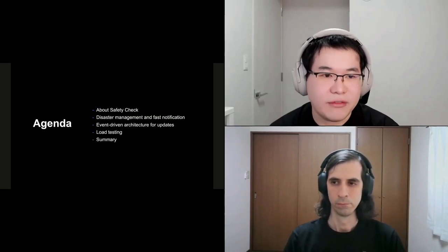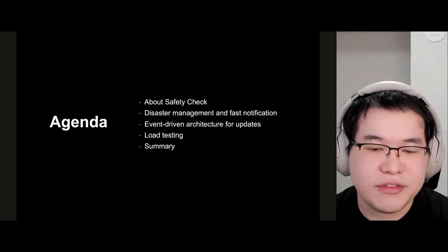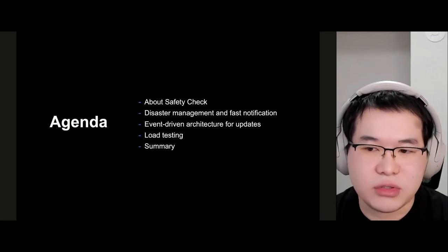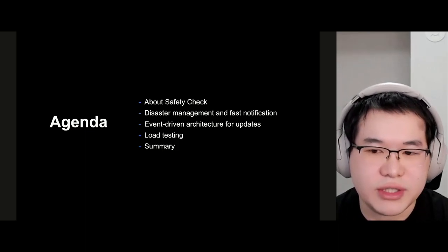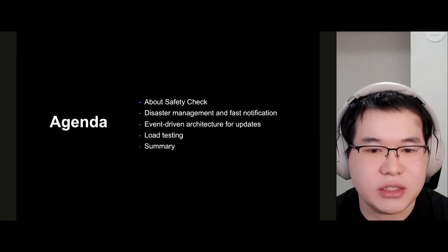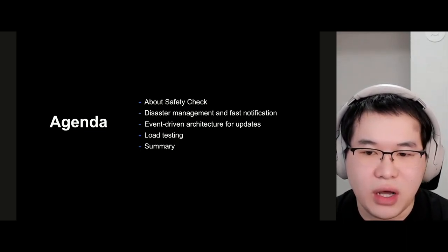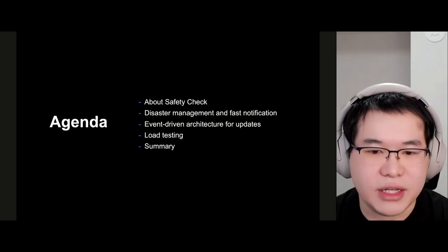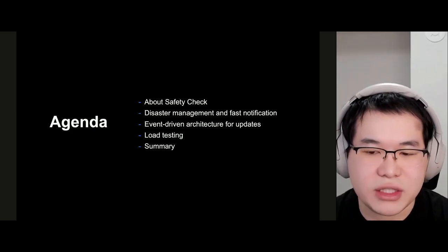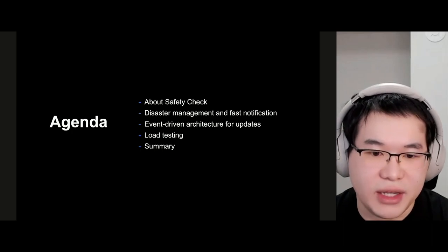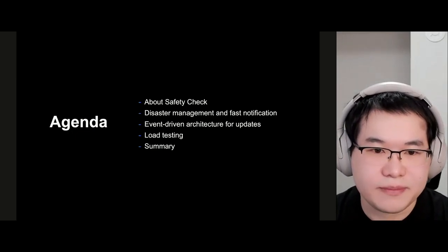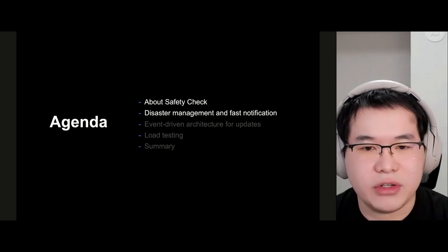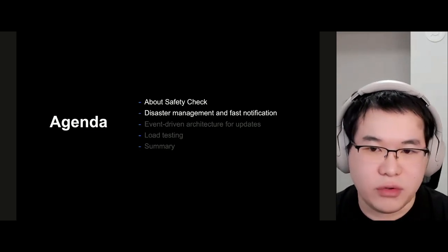This is today's agenda. We have five sections. First, the safety check feature is introduced, with some UI examples. Second, disaster management and notification architecture. We start from the disaster management system and move on to the core part: the event-driven architecture for the update API. Finally, how we did load testing for this high-traffic system, and then a summary. I will cover the first two points and then pass to Alfredo for the rest.